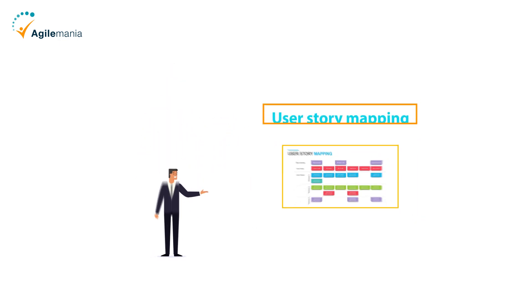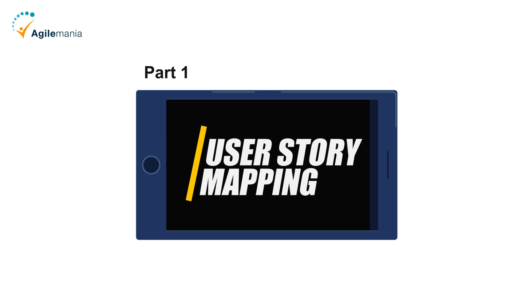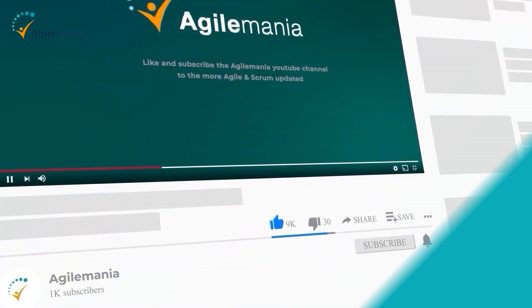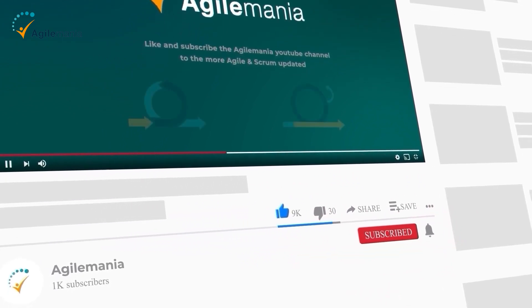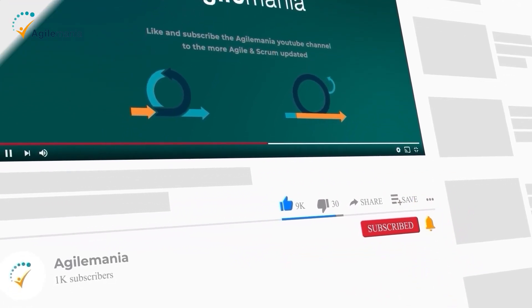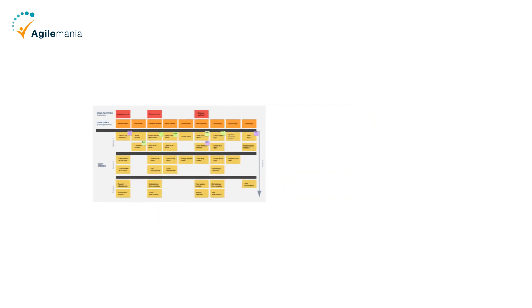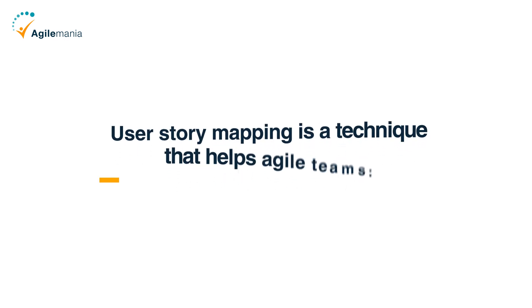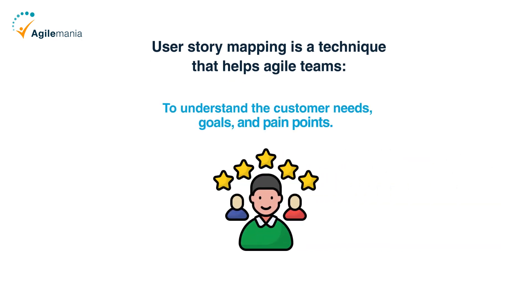That's where user story mapping comes in. In this part one of the video, we are going to talk about what user story mapping is and its benefits and advantages. User story mapping is a technique that helps agile teams create and manage their product backlog in a more effective and efficient way.